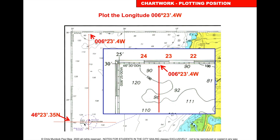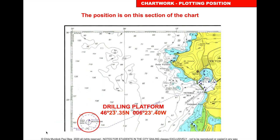Where the two lines meet is our position. The position 46 degrees 23.35 north and 006 degrees 23.4 west is the drilling platform Alpha Juliet Delta in the top left-hand corner of your chart. That is plotting your position by latitude and longitude.